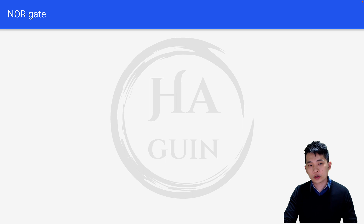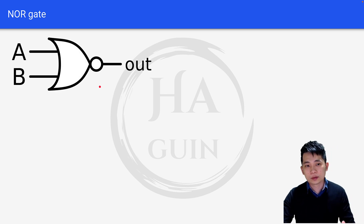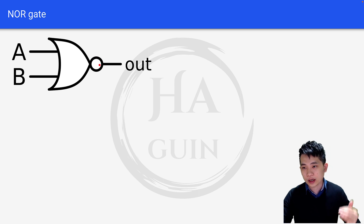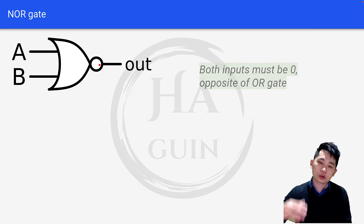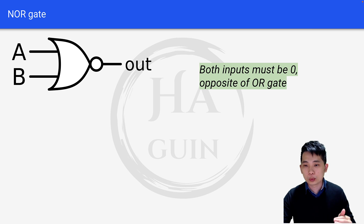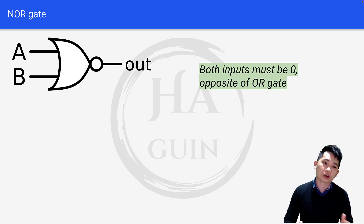For NOR gate, this is the symbol. If you look closely at this symbol, it looks exactly like the OR gate — it's just that it has an extra circle here. In order for the output to be 1, both inputs must be 0, which is exactly opposite of the OR gate.